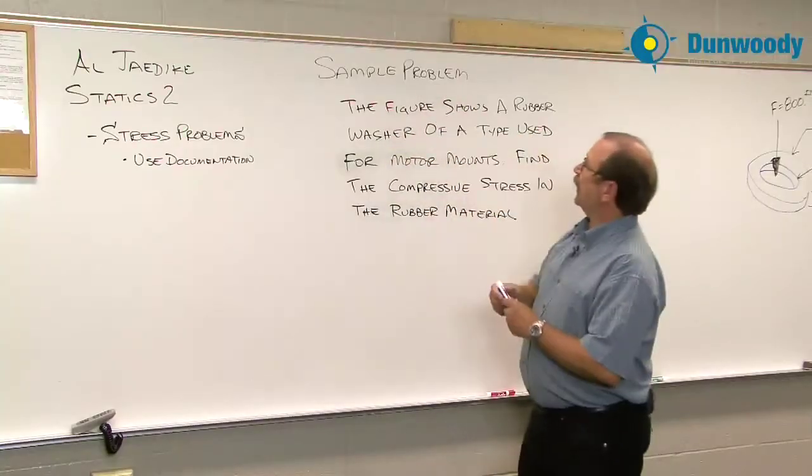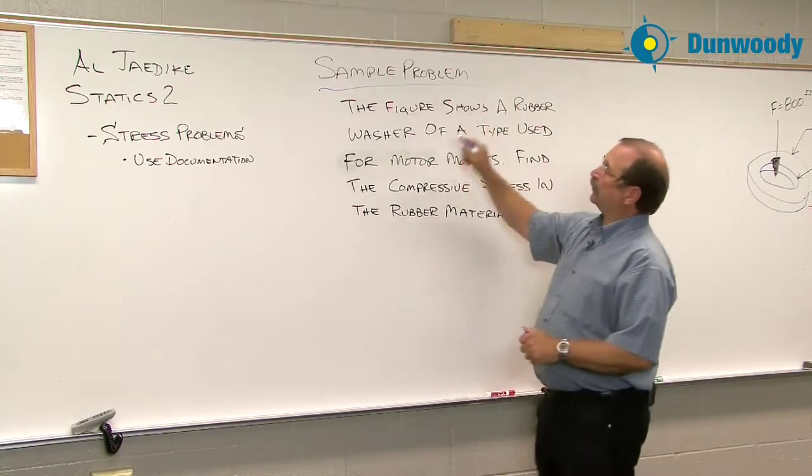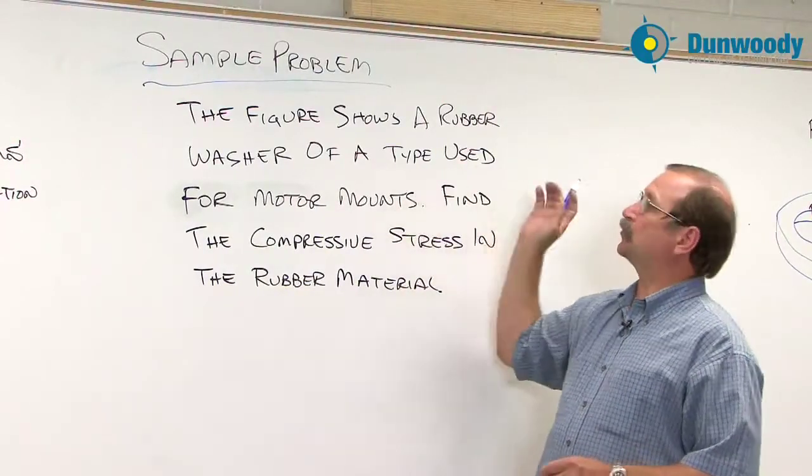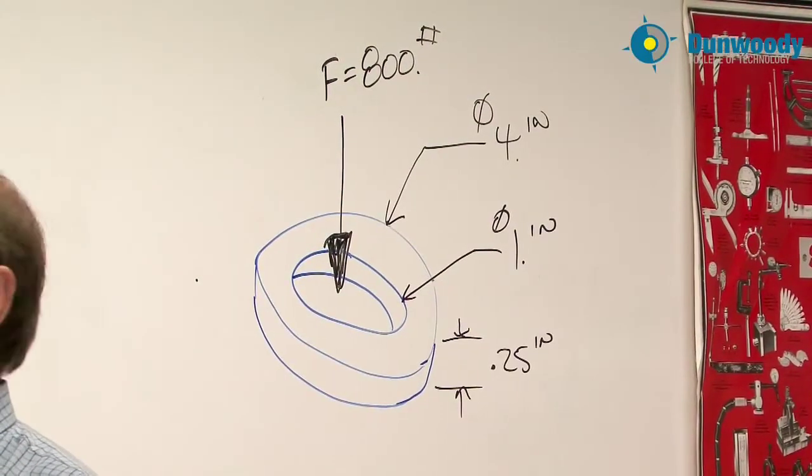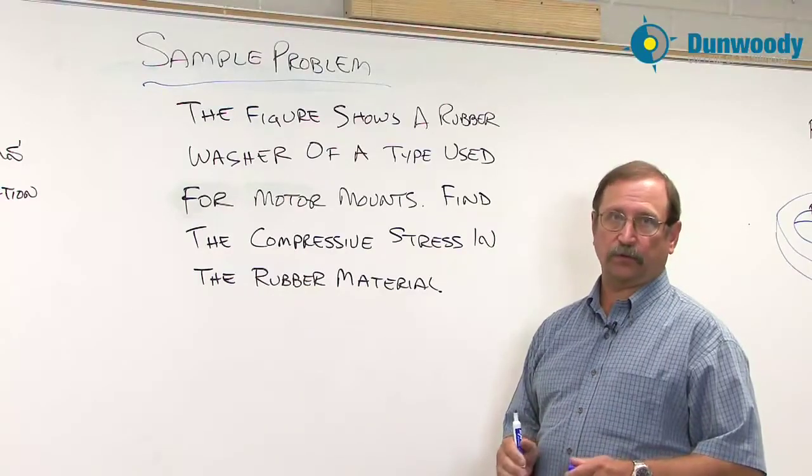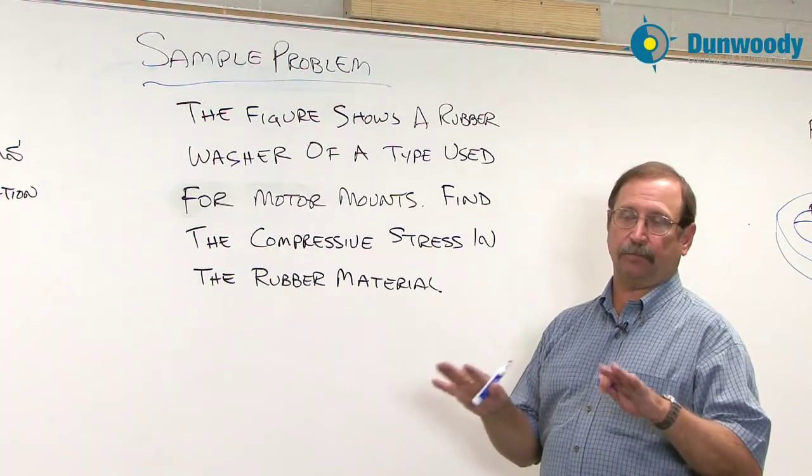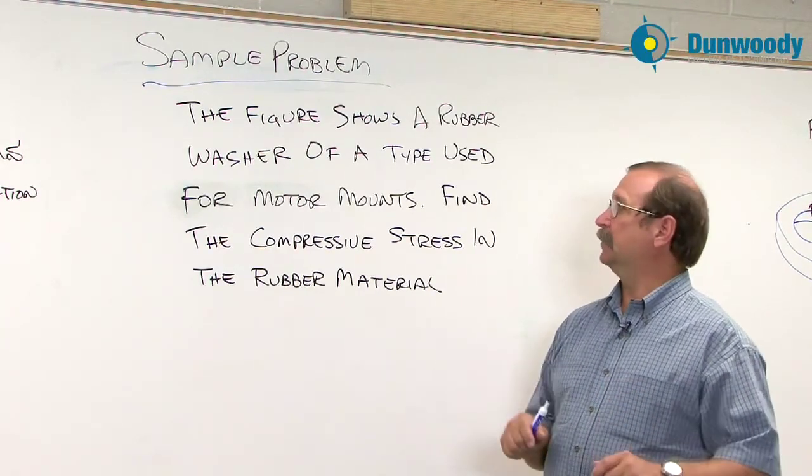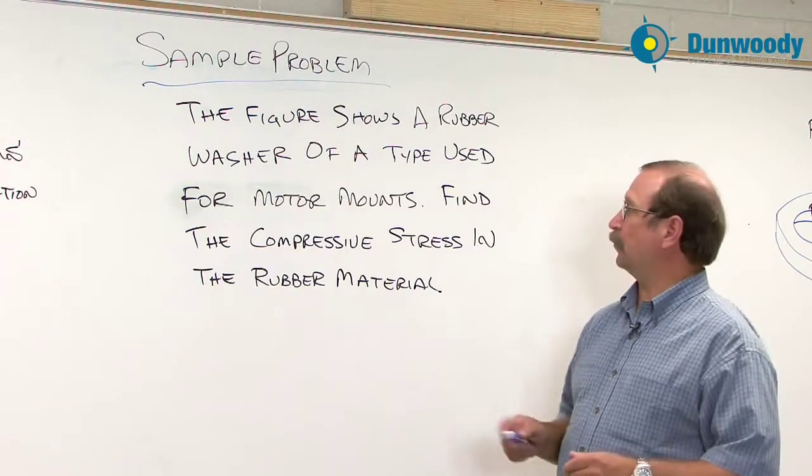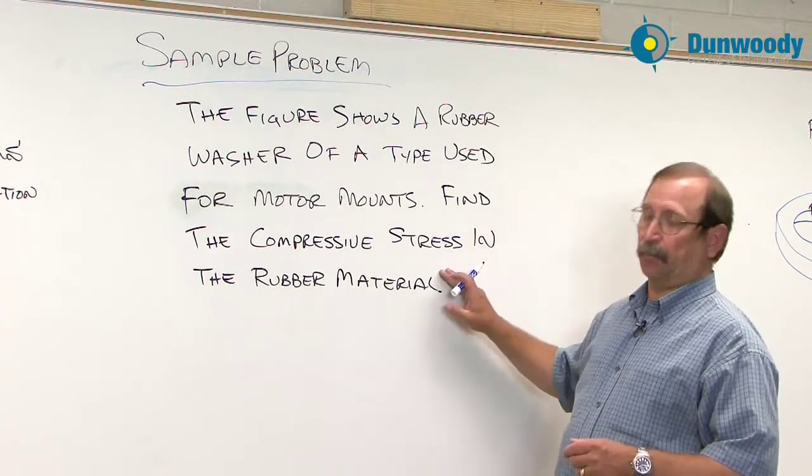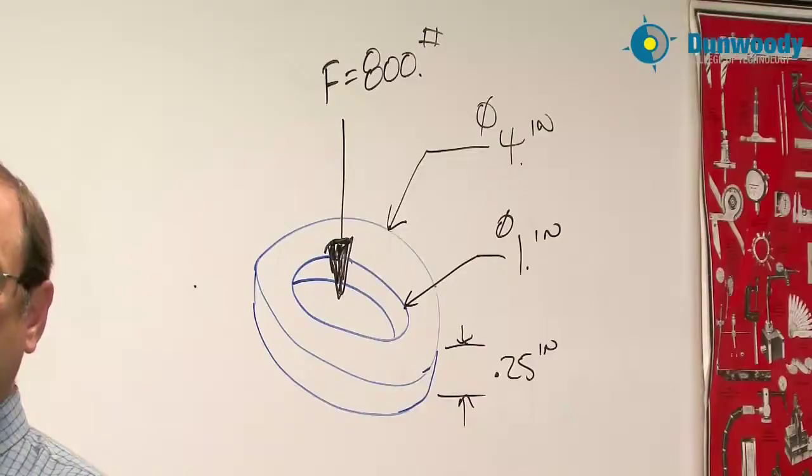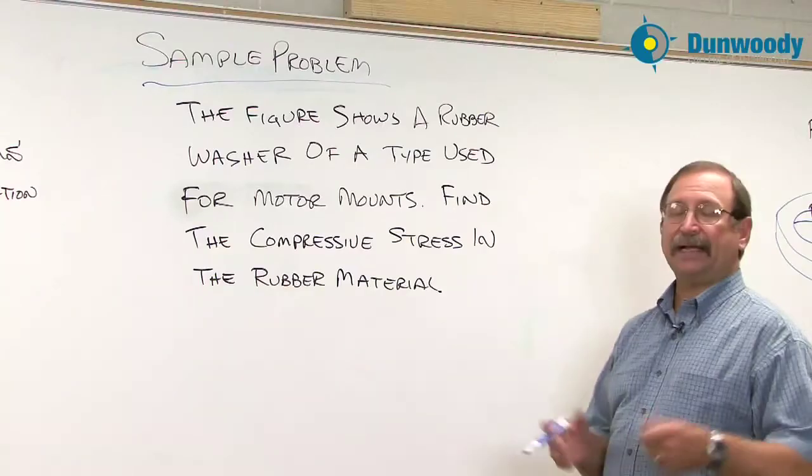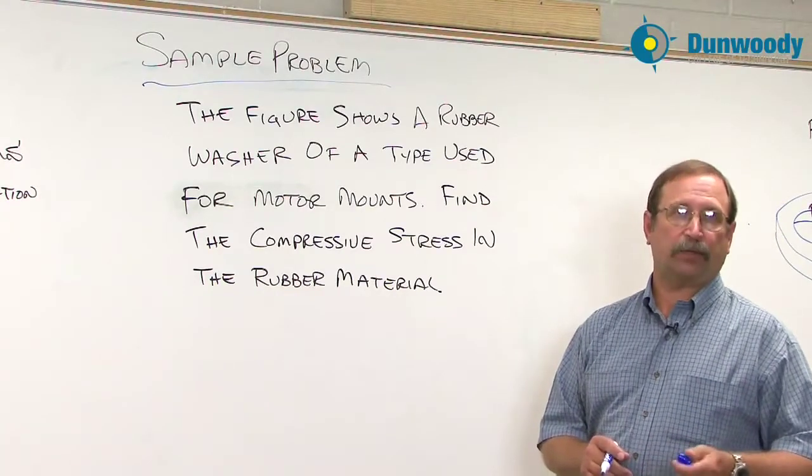Specifically, I want you to use the four-part problem-solving process. So right here, sample problem, is that we have a figure over here behind me that shows a rubber washer. And this type of a washer is used in motor mounts so that when the motor is going through some impact, it settles everything down. So you're to find the compressive stress that's in that rubber material. We want to find out just how much stress is on it. And that can help us select the type of rubber that we're going to use.